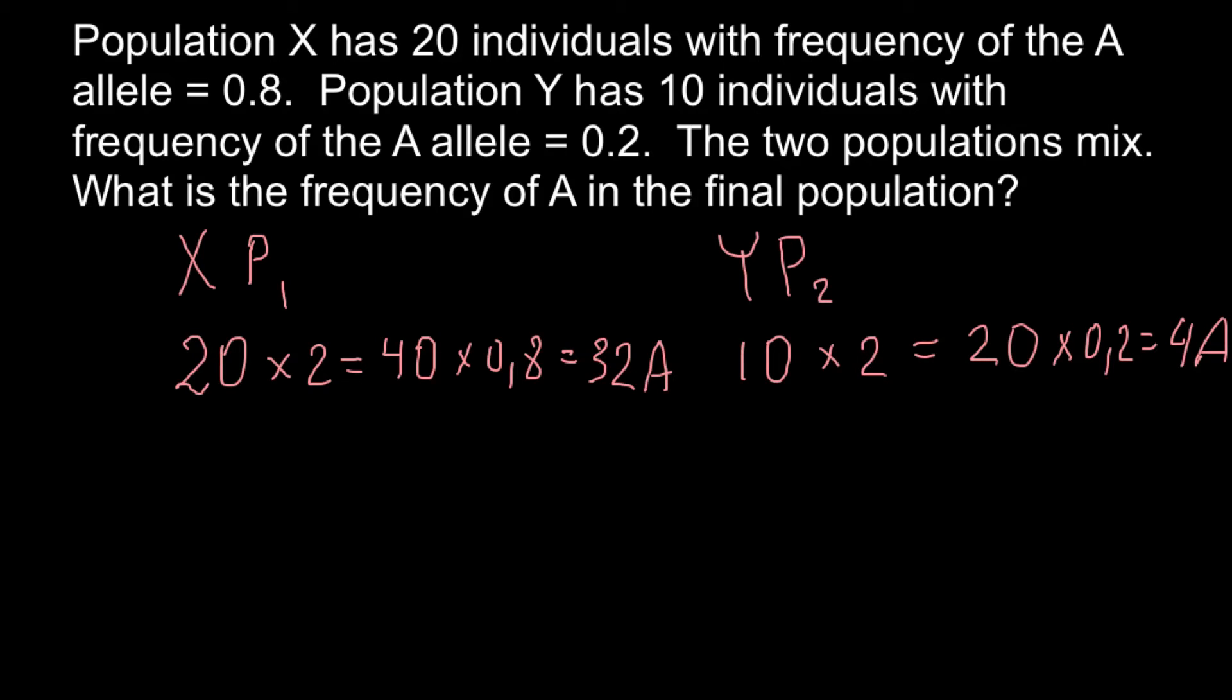Now we have total number of alleles in population 1 and in population 2. Then this also gives us number of the small allele a. That is going to be 40 in this community, 40 minus 32.